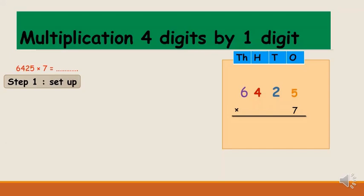The 7 here will multiply the ones first, then tens, hundreds, and thousands. So let's start by multiplying the ones digit.